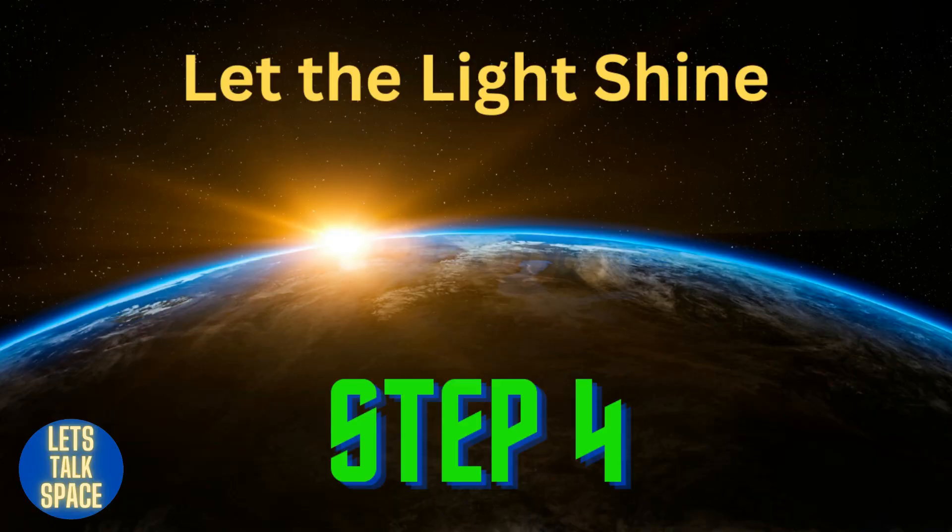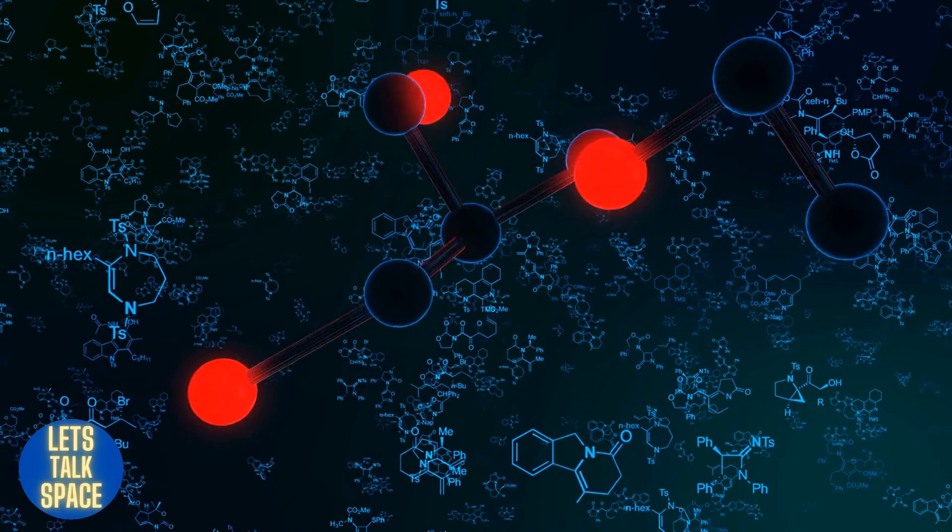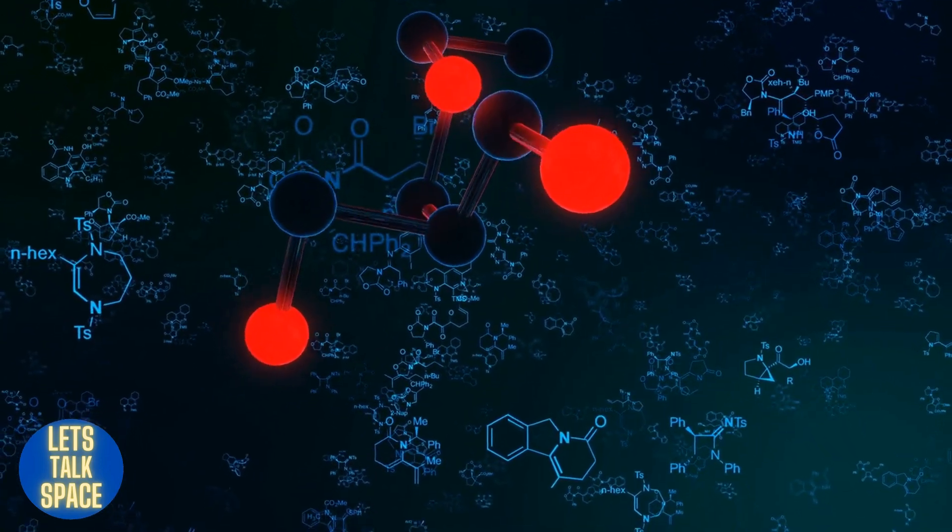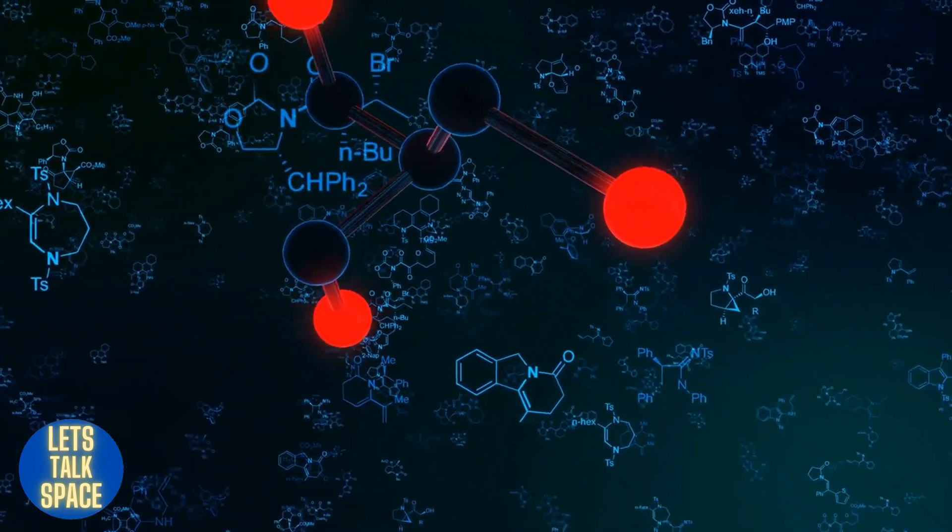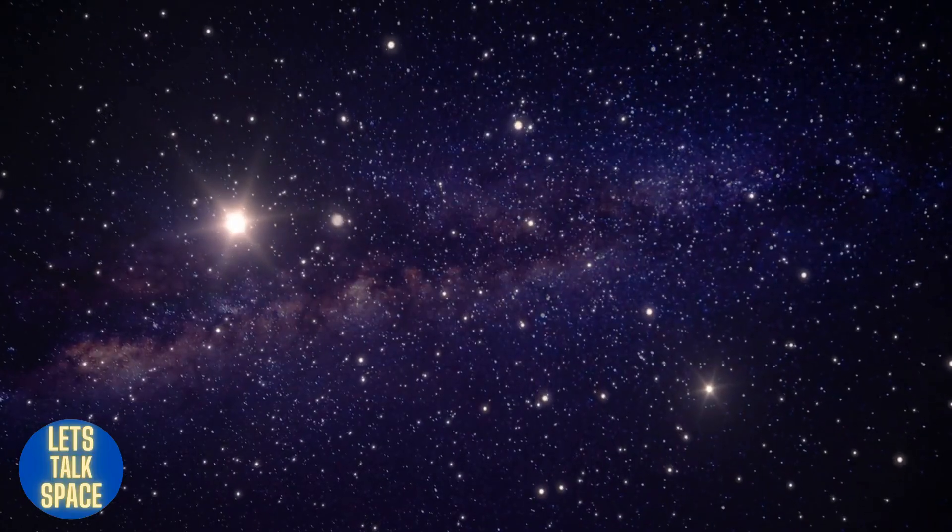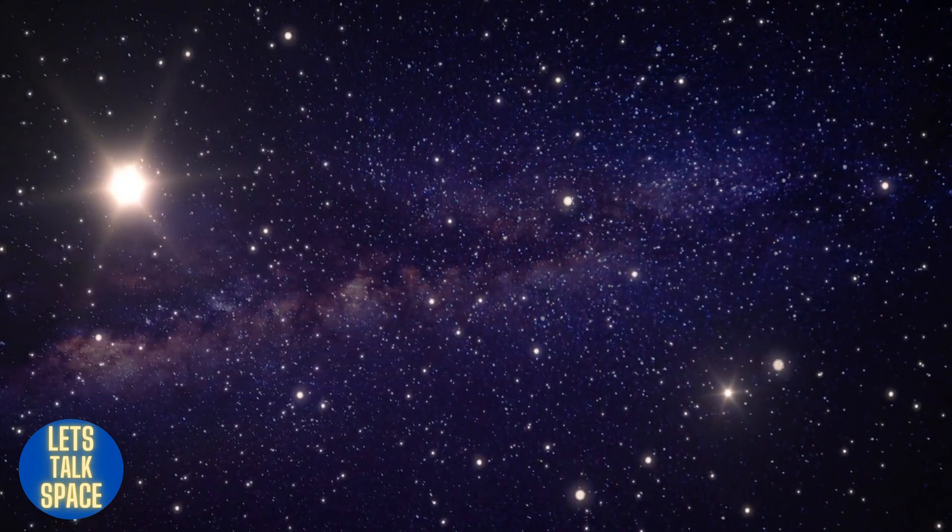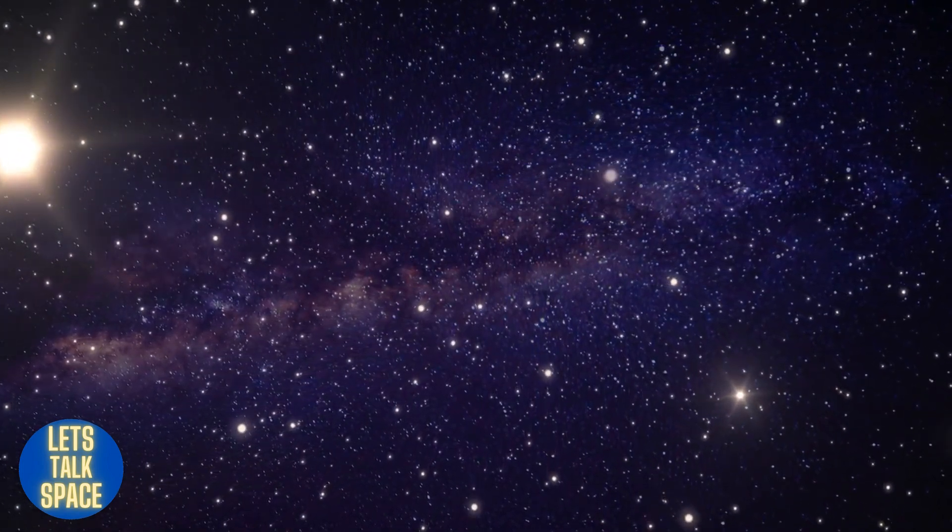Step 4. Let the light shine. Matter cooled enough 380,000 years after the Big Bang for electrons to unite with nuclei to form neutral atoms. The absorption of free electrons caused the cosmos to become transparent during this phase, which is known as recombination.